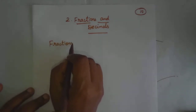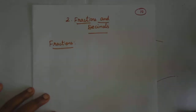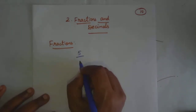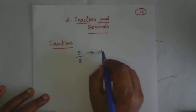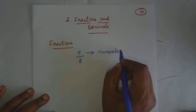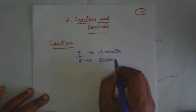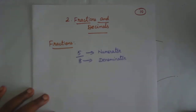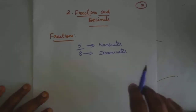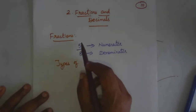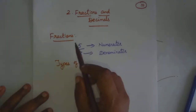First we will see about fractions. So what are the types of fractions? What is a fraction? Fractions have a numerator and denominator. A number is in the form of numerator and denominator. See here, 5 by 8 is a fraction. This is called a numerator. This 8 is called denominator. So this is a numerator and denominator.